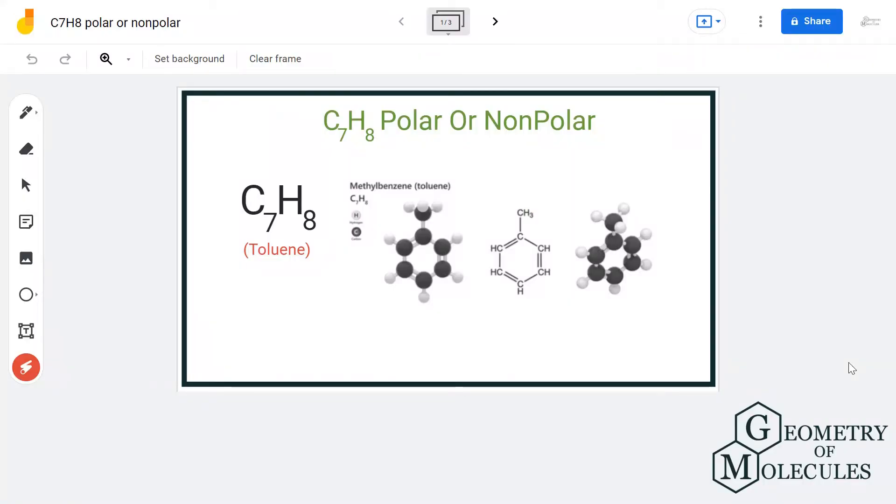Hi guys, welcome back to our channel. In today's video we are going to help you determine if toluene or C7H8 is a polar or non-polar molecule. If you look at its Lewis structure, it's a cyclic hydrocarbon as it consists of seven carbon atoms and eight hydrogen atoms.